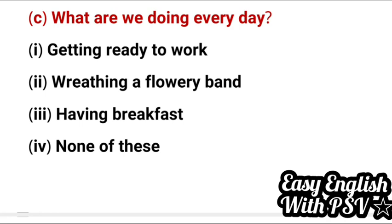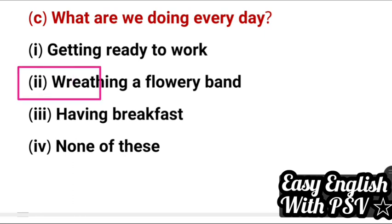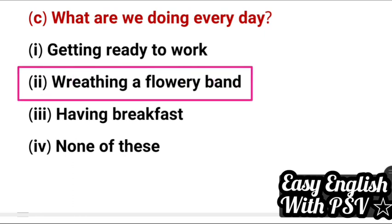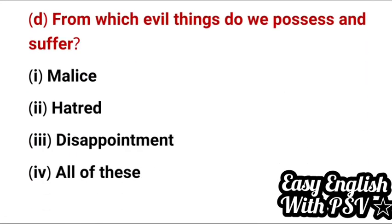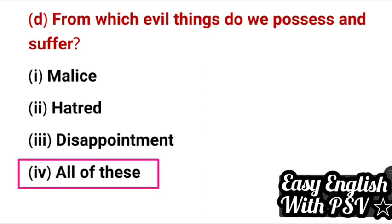Question: What are we doing every day? Options: getting ready to work, reading a flowery band, having breakfast, none of these. Correct answer: reading a flowery band. Also, if this sentence comes and you are asked about its figure of speech — when 'are we' comes, it becomes inversion, because the words are not in their proper order. Final question: From which evil things do we possess and suffer? Options: malice, hatred, disappointment. Correct answer: all of these. I hope you all have done well!